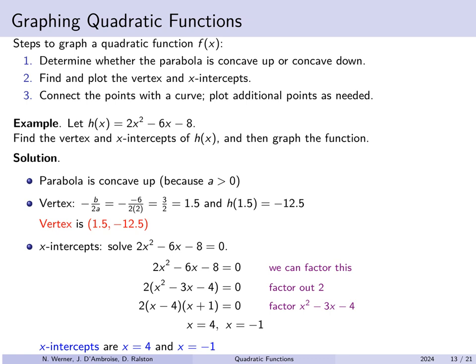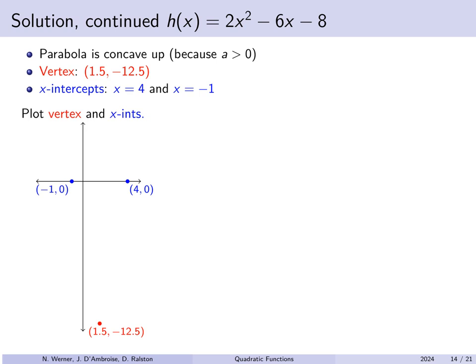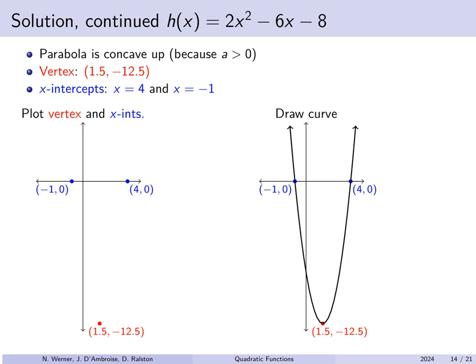We have found the vertex at (1.5, −12.5) and x-intercepts at 4 and −1. This parabola is concave up. Plotting the vertex and x-intercepts — the vertex at (1.5, −12.5), intercepts at x = 4 and x = −1 with y = 0 — the vertex tells us exactly where the bottom of the parabola is. Connecting these points with a parabolic curve gives us the graph of h(x) = 2x² − 6x − 8.